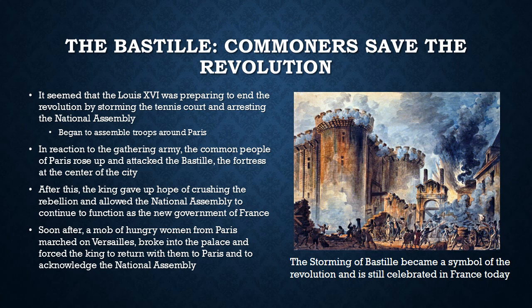Soon after, a mob of hungry women from Paris — hungry because there wasn't enough food going into the city — marched out to Versailles, broke into the palace, and forced the king to return with them to Paris and more or less acknowledge the National Assembly as the new government of France. So the commoners, in a spontaneous way, helped to support the French Revolution by throwing their weight behind the National Assembly.